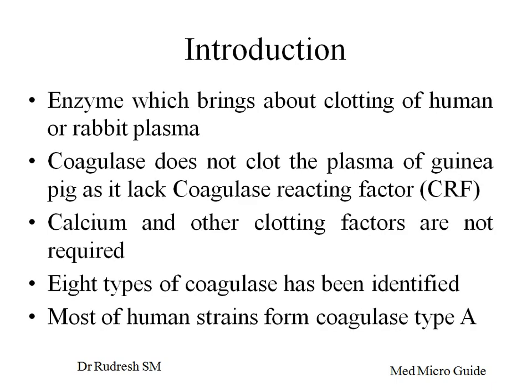Coagulase is an enzyme produced by Staphylococcus aureus. It is one of the important virulence factors. The coagulase enzyme brings about the clotting of human or rabbit plasma. It requires the coagulase reacting factor for its action. Guinea pig and a few other animals lack the coagulase reacting factor.